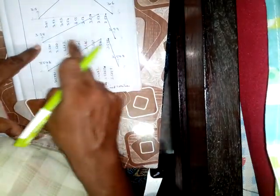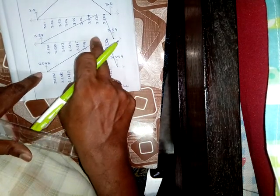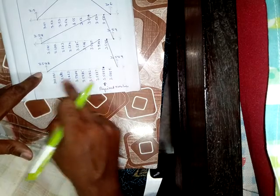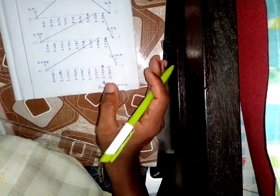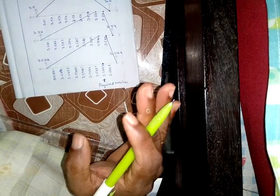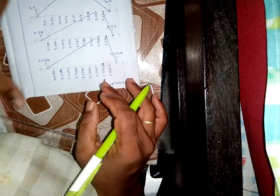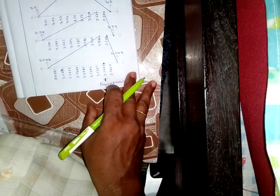So by successive magnification: 3.5 lies between 3 and 4; 3.58 lies between 3.5 and 3.6; 3.588 lies between 3.58 and 3.59; and the required number 3.5888 lies between 3.588 and 3.589. Finally we get the required number. This is the way of showing real numbers on the number line. In this way we visualize the representation of real numbers on the number line.